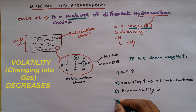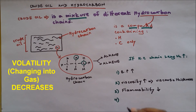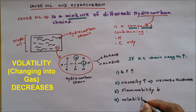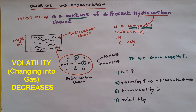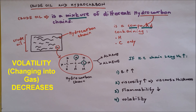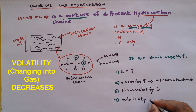Number 4: volatility. Volatility means how easily it forms into a gas. A longer chain hardly forms into a gas — it needs a higher temperature to form into a gas. So this property decreases.